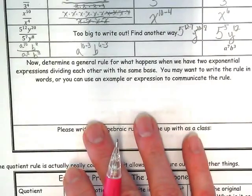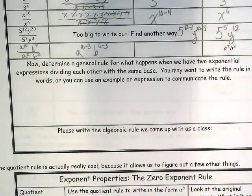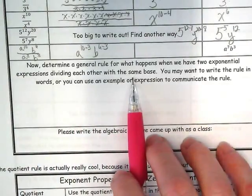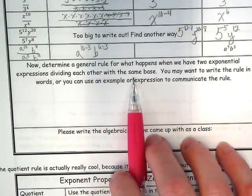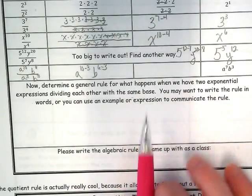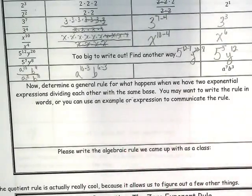I want you to take a minute to determine a rule for what happens when you have two exponential expressions dividing each other with the same base. So look at what we've been doing up there and see if you can put what we've been doing into words that are a rule, or you can use an example or you can use an expression.